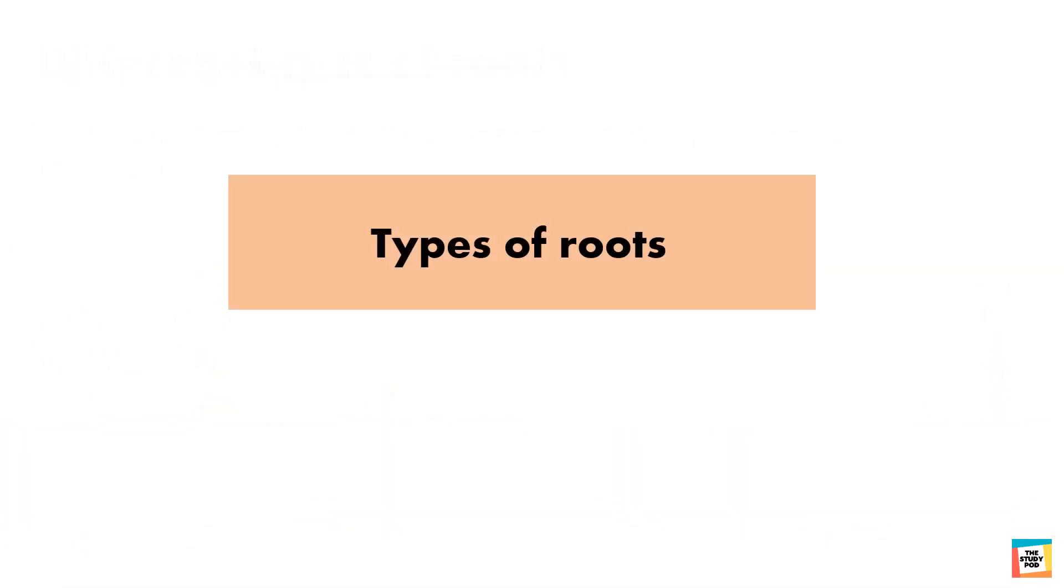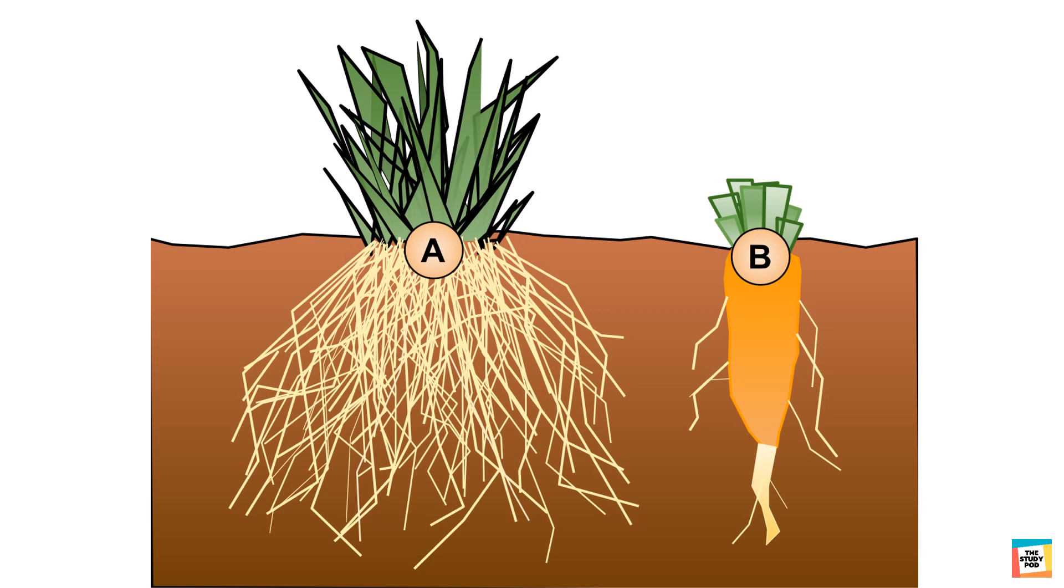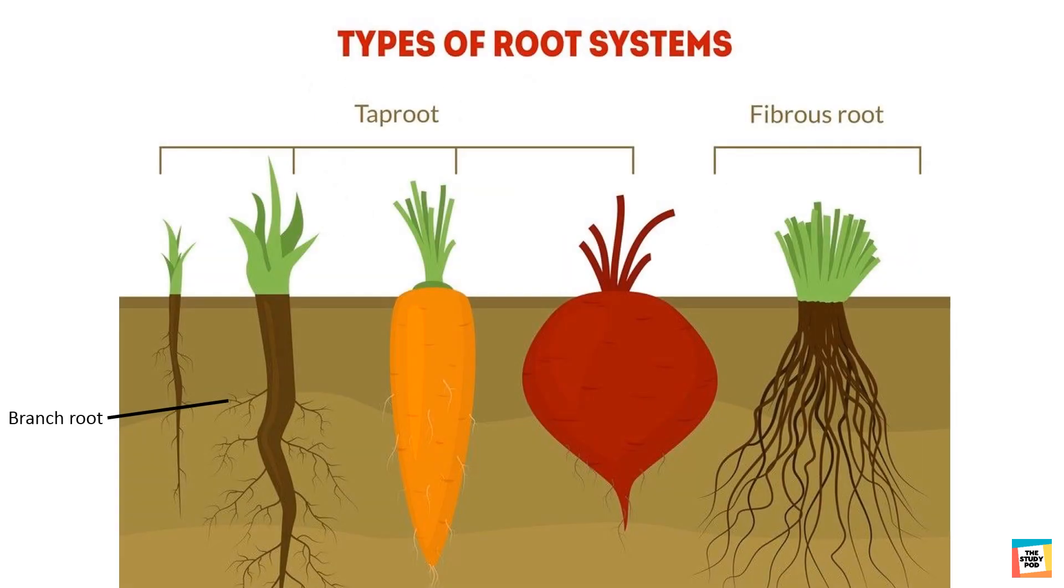There are two types of roots. In the picture, plant A is fibrous root and B is taproot. The roots of some plants, like carrot, consist of a long main root called taproot with many smaller roots branching from it. This type of root system is called the taproot system.